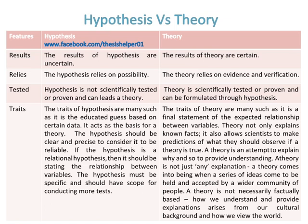The hypothesis must be specific and should have scope for conducting more tests. The traits of a theory include: it is a final statement of the expected relationship between variables; it not only explains known facts but also allows scientists to make predictions of what they should observe if a theory is true; it is an attempt to explain why and to provide understanding; and it comes into being when a series of ideas come to be held and accepted by a wider community of people.